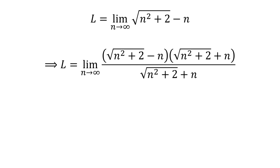Multiplying the numerator and denominator of a fraction by a common factor does not change the value of the fraction. So let us multiply the numerator and denominator by the common factor square root of n squared plus 2 plus n.